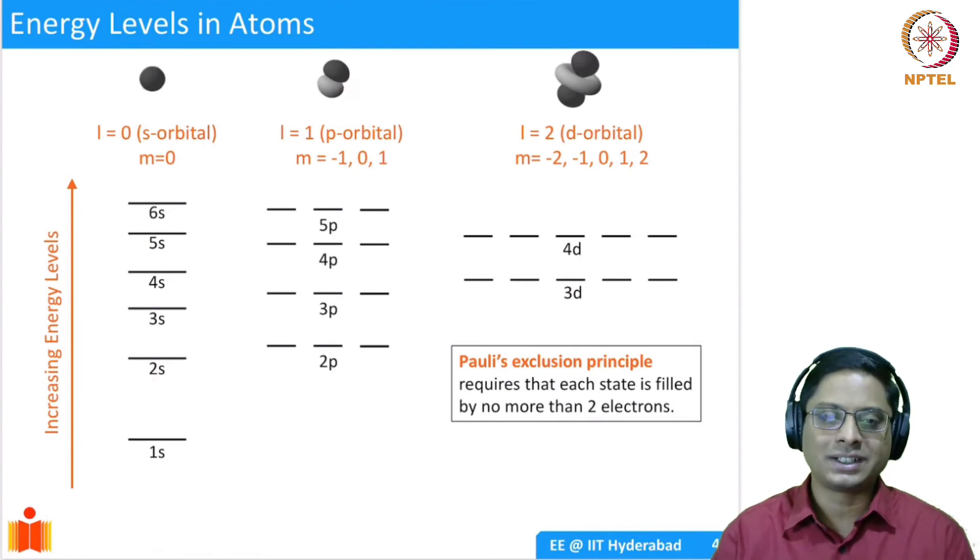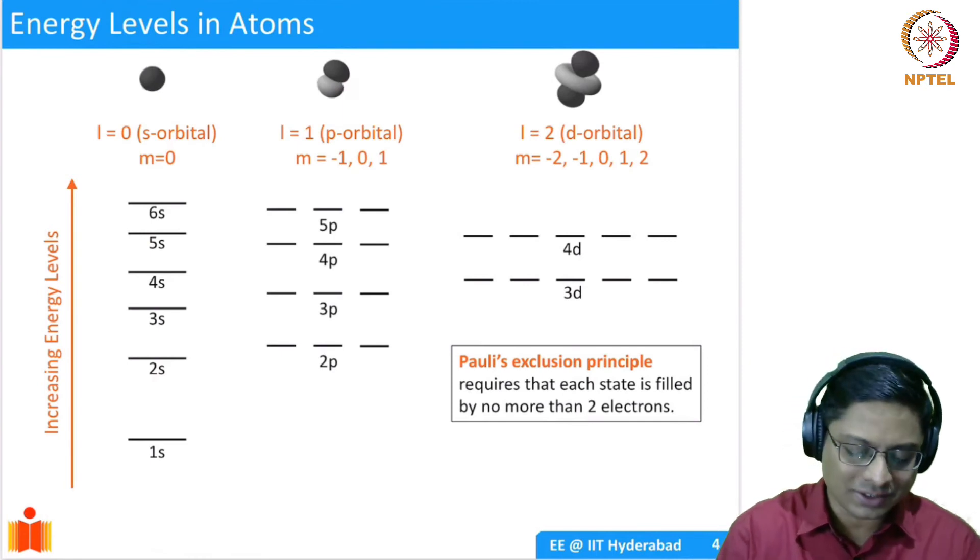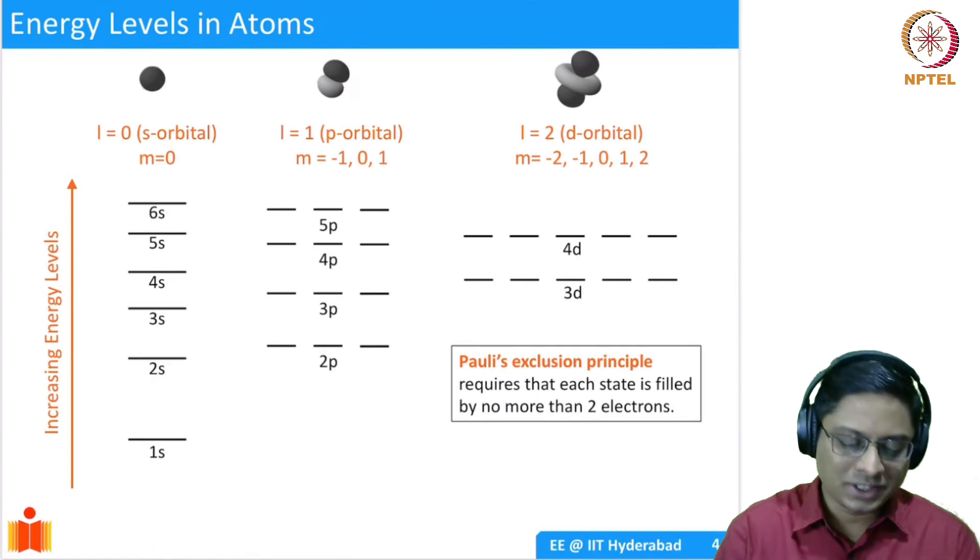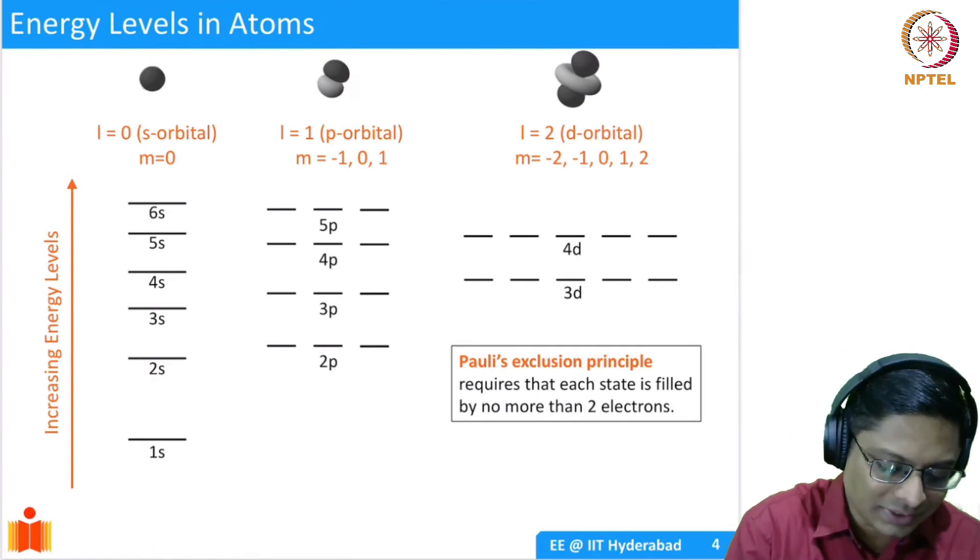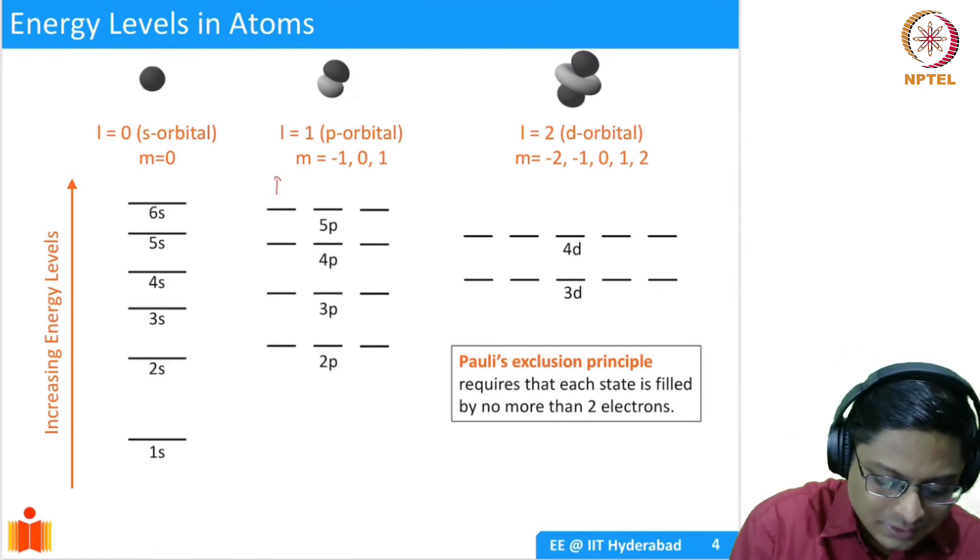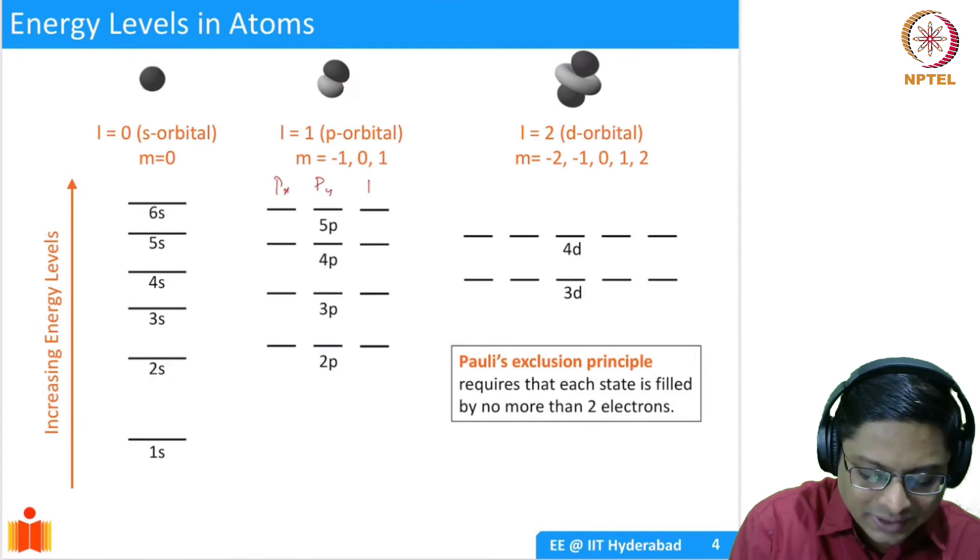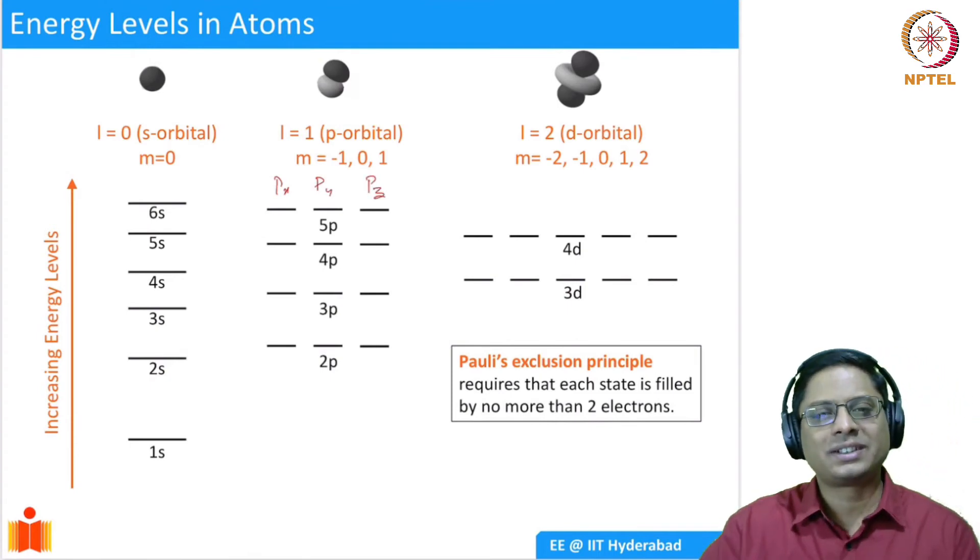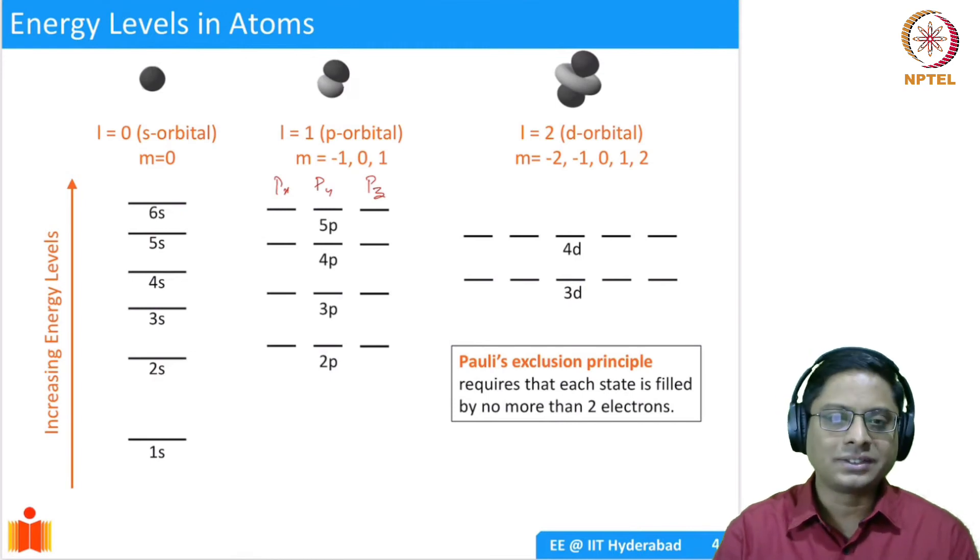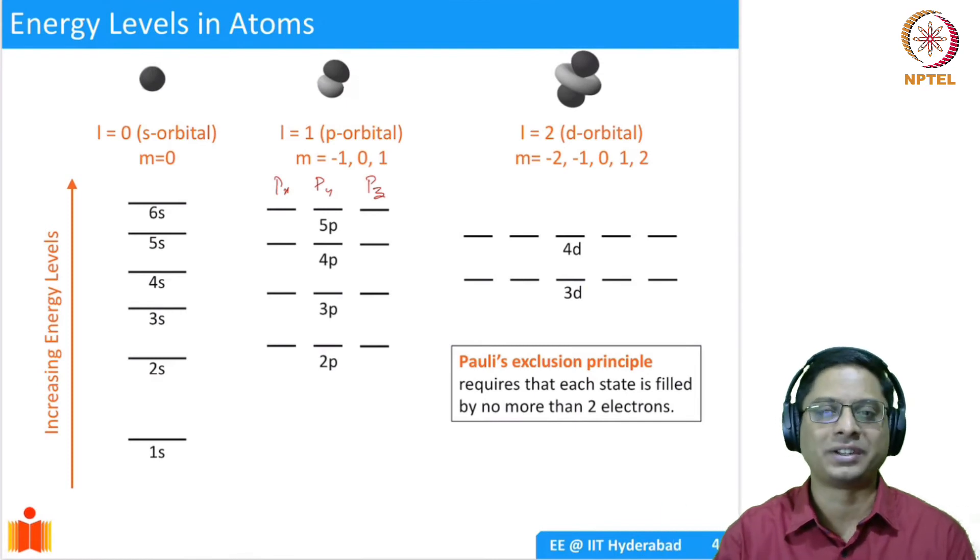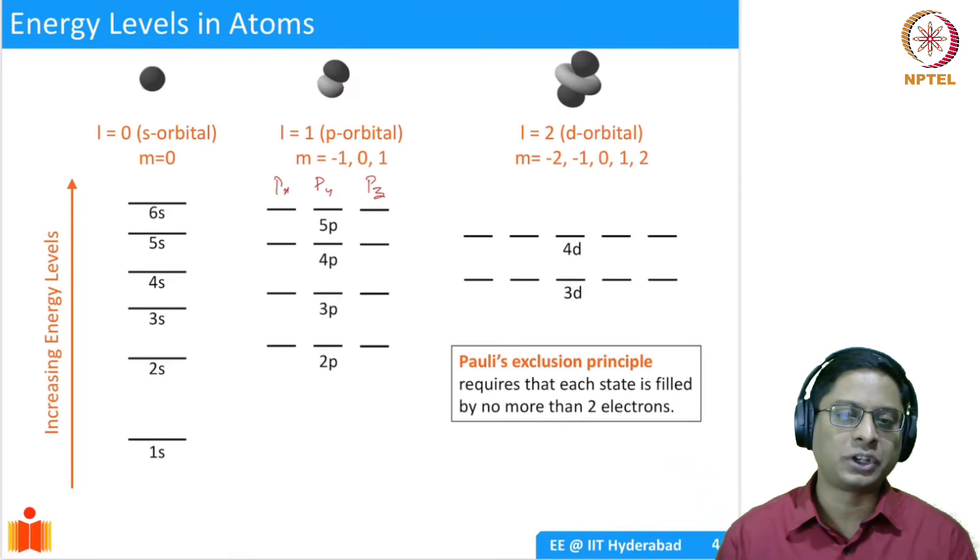What is more? Whenever you have L equal to 1, M can take three values. It can go from minus L to plus L. So in this case, it will go as minus 1, 0, and 1. These are the three quantum numbers which are allowed, which result in three energy levels at the same energy. There are three levels at the same energy, which we call as degeneracy. So you have Px, Py, and Pz. These are essentially energy levels that have the same energy, but there are three distinct levels, and we call them degenerate levels. Similarly, if you go to L equal to 2, we have a d orbital,